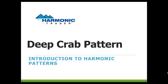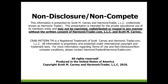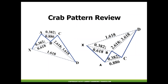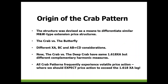This is an introduction to the deep crab pattern. In the earlier introduction to the basic crab pattern, we talked about the M and W formation that utilizes a 1.618 extension. The deep crab pattern is a variation of this structure with similar measurements but slightly different combinations. We treat the pattern slightly differently than the regular crab. The basic crab arose from the M and W differentiation to look at extension price structures, measure them, and create rules to devise different structures.